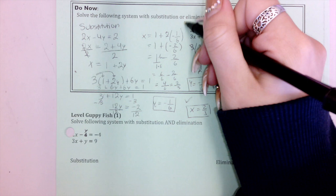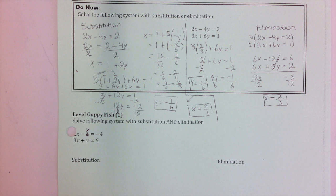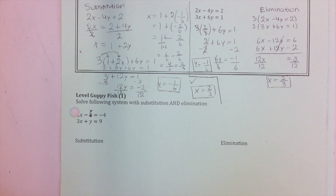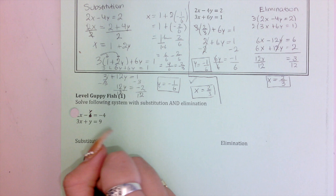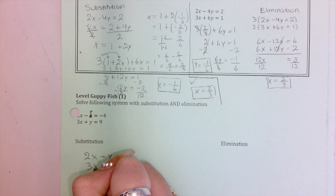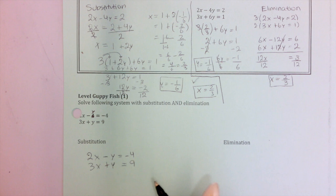Both elimination and substitution give the same answers. Now let's keep going. There was a little mistake to fix on this one, so I'll rewrite it. You have 2x minus y equals negative 4 and 3x plus y equals 9. For substitution, I need to solve for one variable.